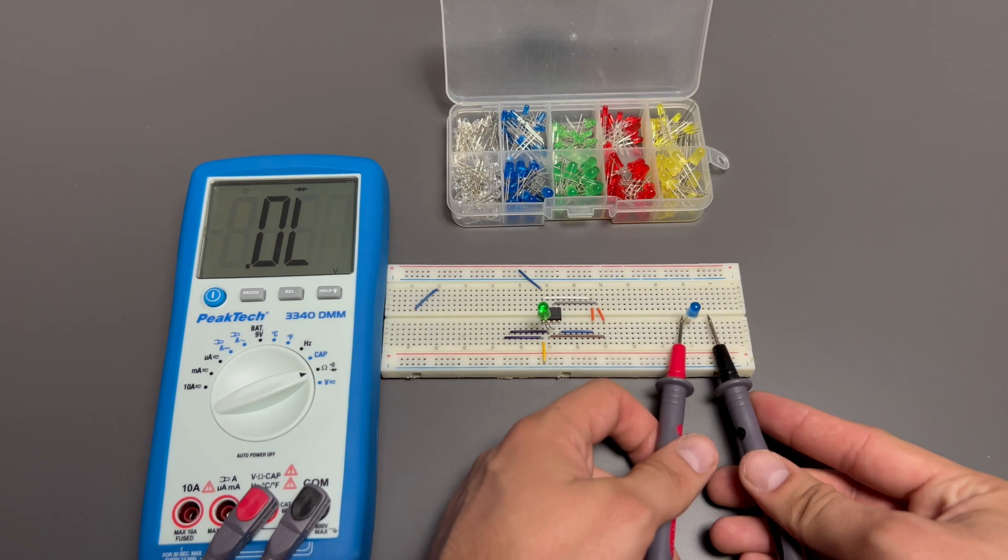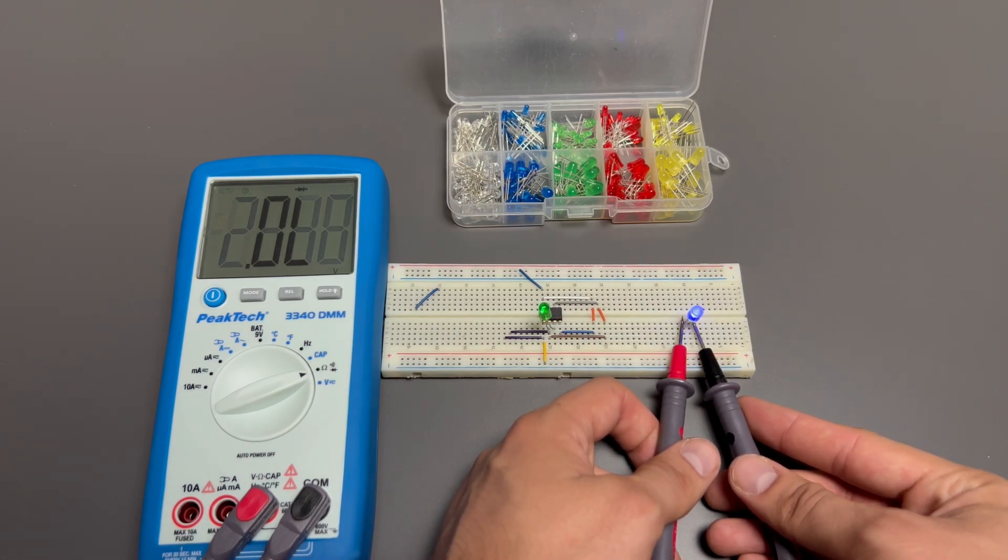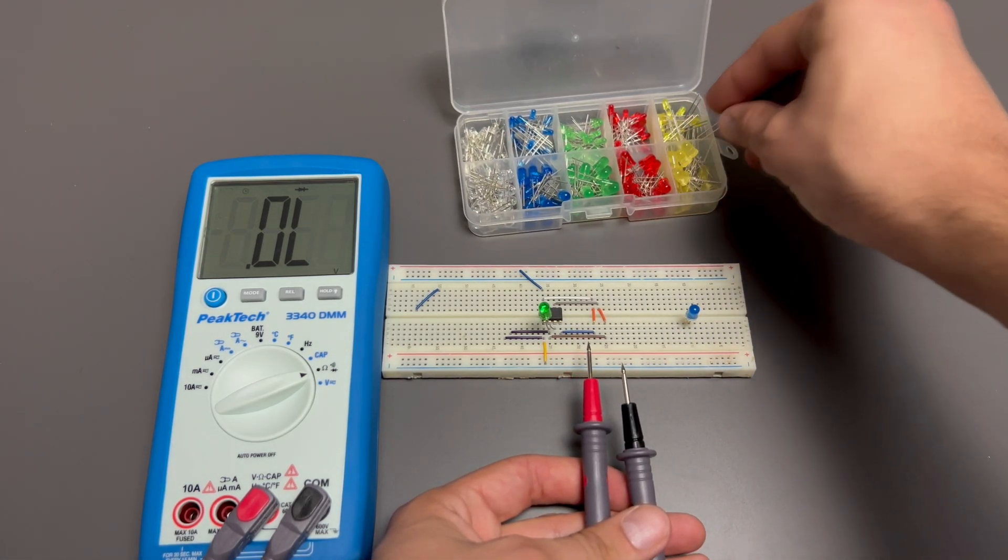Set the rotary selector switch to the ohm position. Select the diode function by pressing the mode button. Measurements must only be made with the circuit power off.